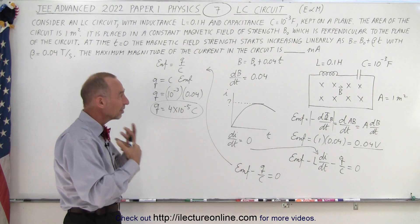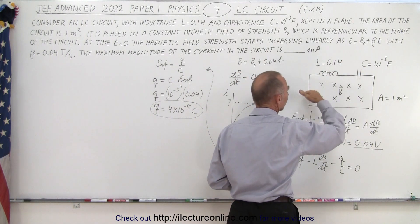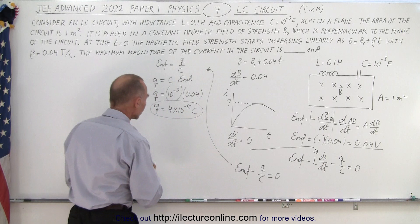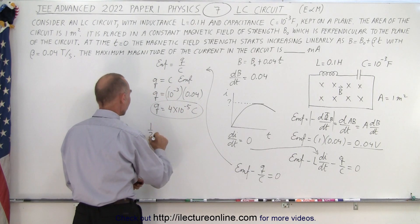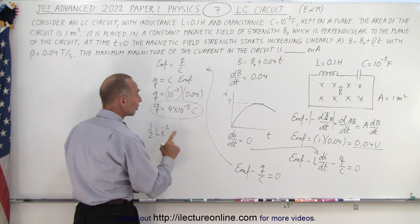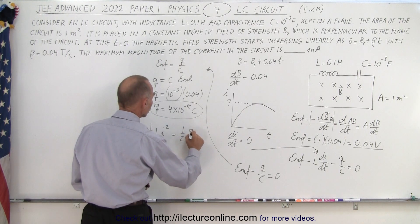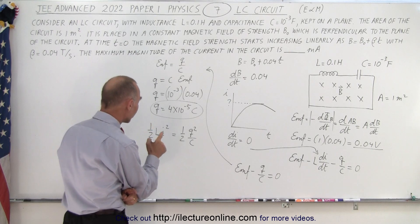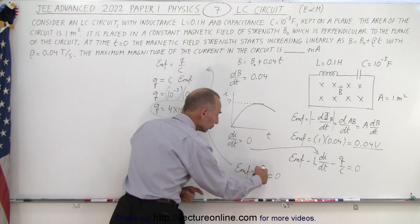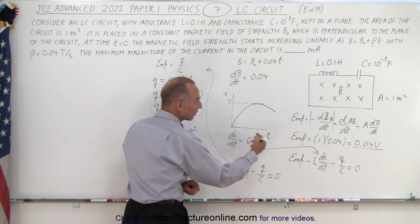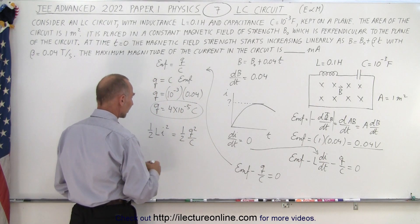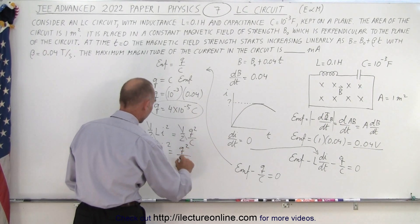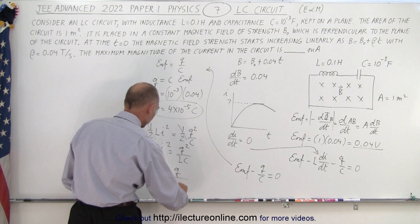Next, we consider the energy stored on the inductor and the capacitor. In an LC circuit, energy goes back and forth — the maximum energy on the inductor equals the maximum energy on the capacitor. Maximum energy on the inductor is ½·L·I². Maximum energy on the capacitor is ½·Q²/C. Setting these equal and solving for I: I squared equals Q squared divided by L·C, so I equals Q divided by the square root of L times C.